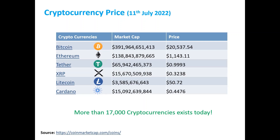Their market capital is so large that it shows people have great interest. The market capital is based on the current price. This is the price as of July 11, 2022. At that point, Bitcoin was priced at $20,000 US dollars and Ethereum was priced at $1,000 US dollars.